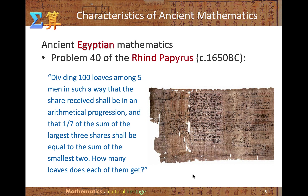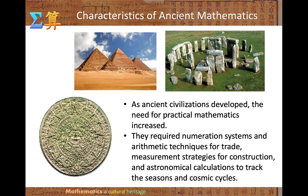We studied the Rhind Papyrus in the first tutorial. Problem 14 of the Rhind Papyrus involves dividing 100 loaves among five men in arithmetic progression, where one-third of the sum of the largest three shares equals the sum of the smallest two. Egyptian mathematics is similar to Babylonian in that mathematics was in a problem-procedure-answer format. As ancient civilizations developed, the need for practical mathematics increased — requiring numeration systems for trade, measurement strategies for construction, and astronomical calculations to track seasons.